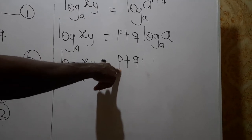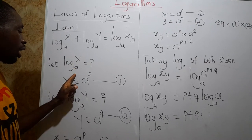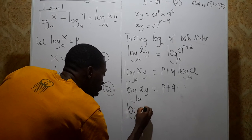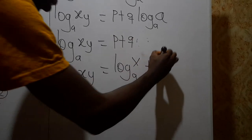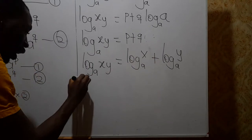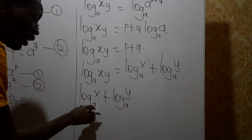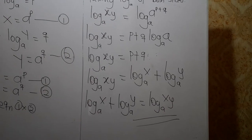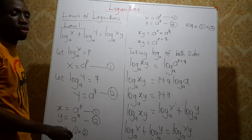Now we substitute back: p equals log x base a and q equals log y base a. So log(xy) base a equals log x base a plus log y base a. We have proved that if two logarithms are added with the same base, you can repeat the base and multiply the logs. Now let's prove the second law.